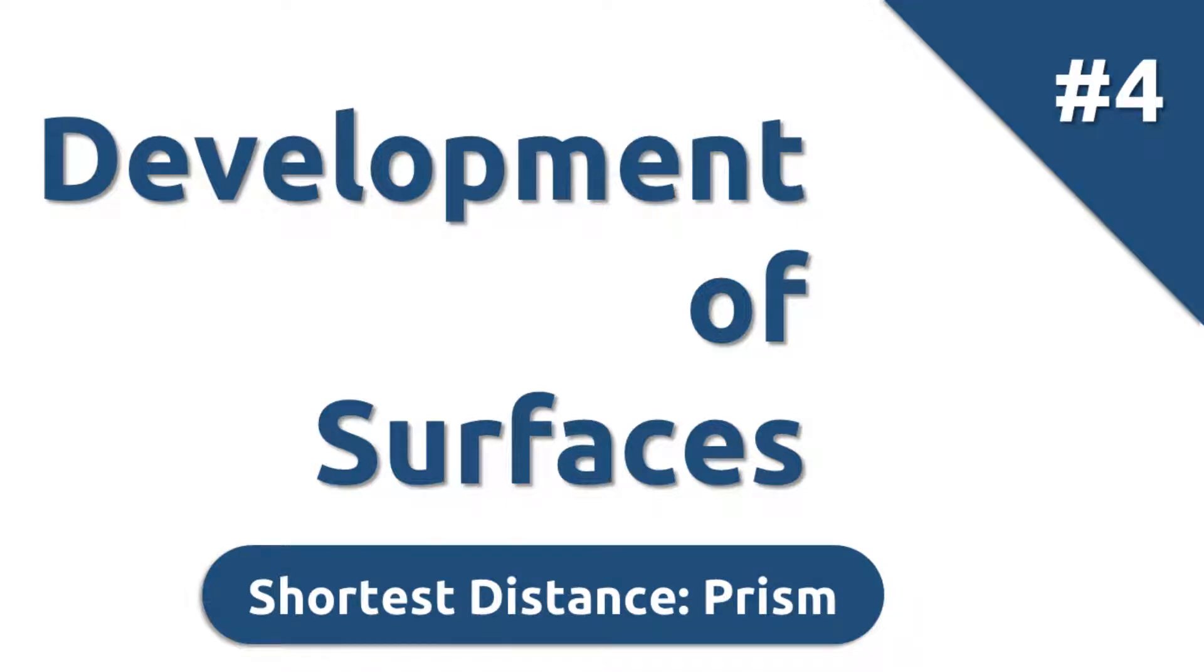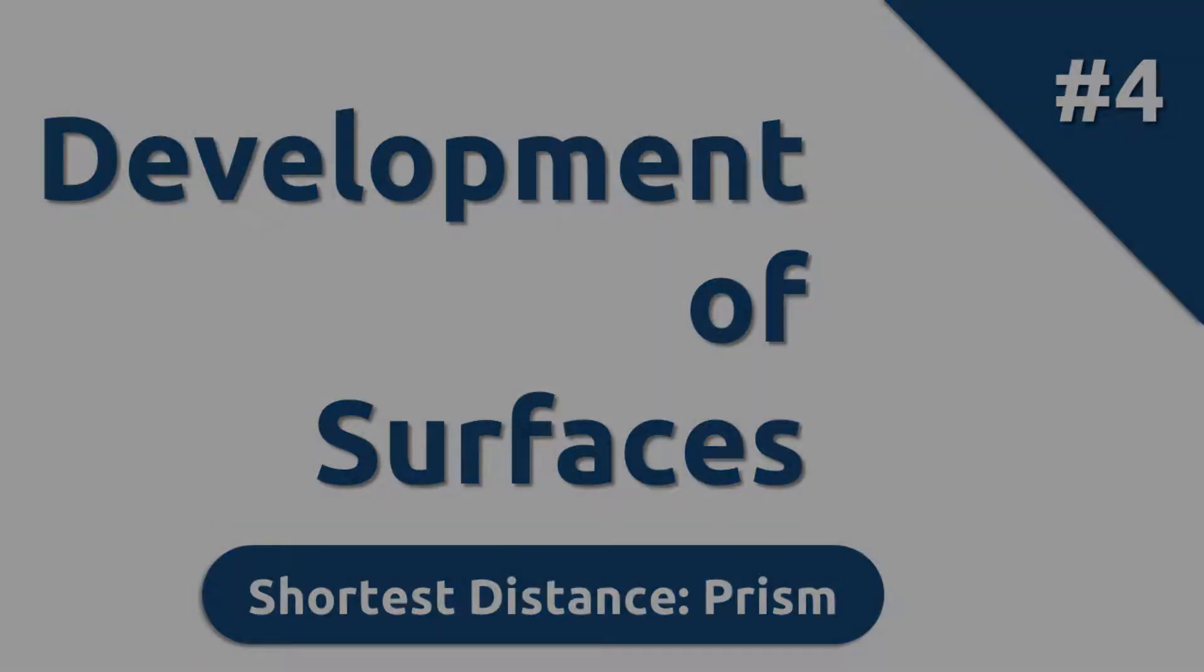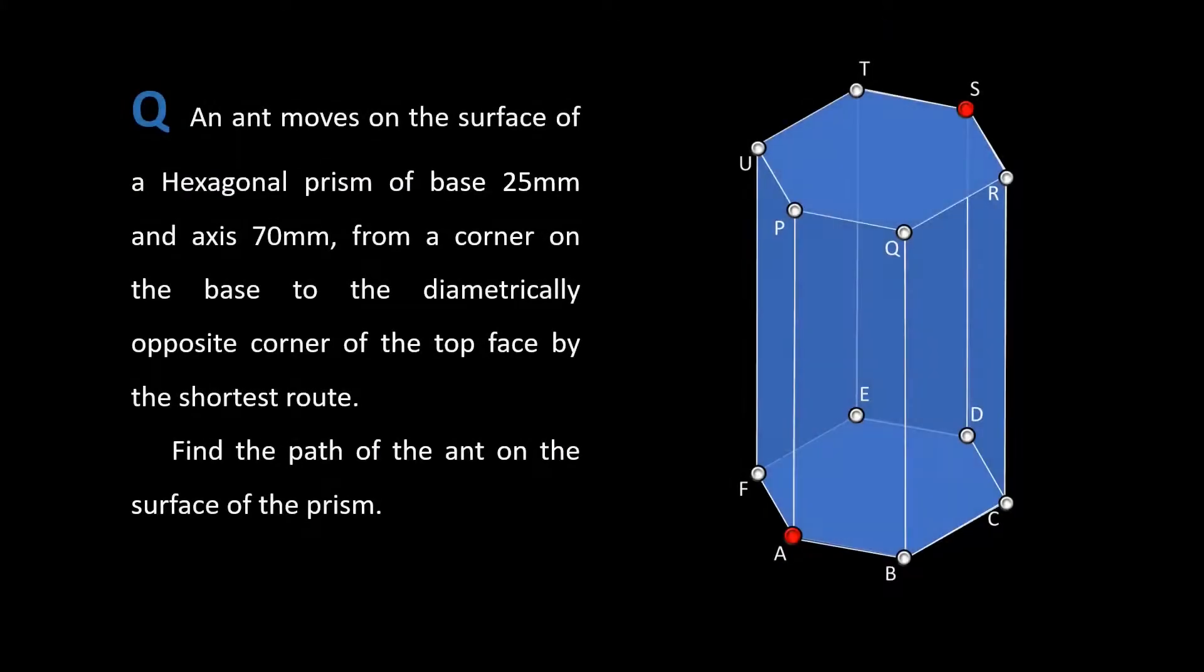Welcome to the session on a simple application problem on development of surfaces. The problem: an ant moves on the surface of a hexagonal prism of base edge 25mm and axis 70mm, from a corner on the base to the diametrically opposite corner of the top face by the shortest route. Find the path of the ant on the surface of the prism.